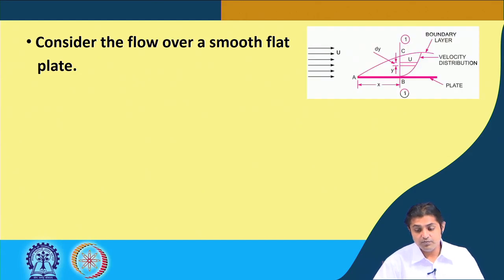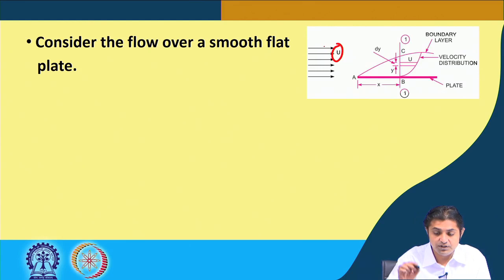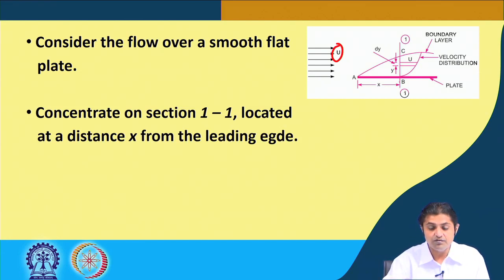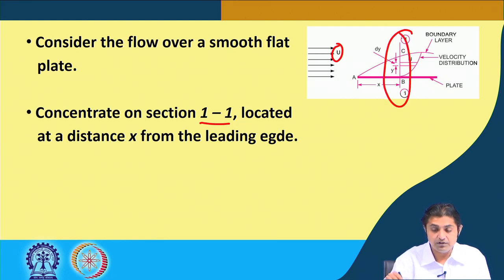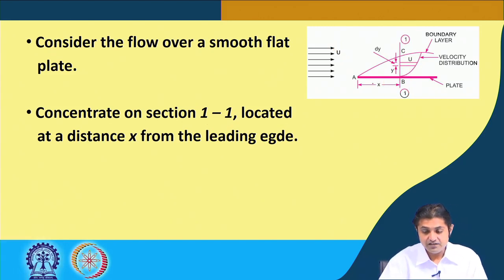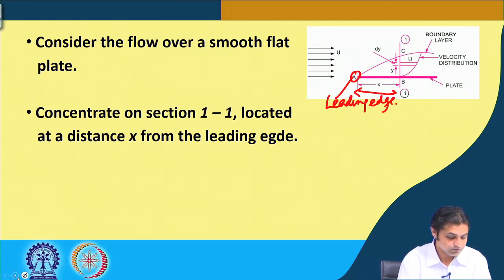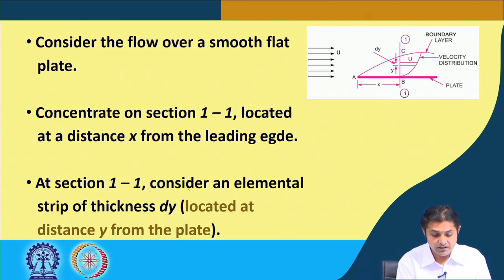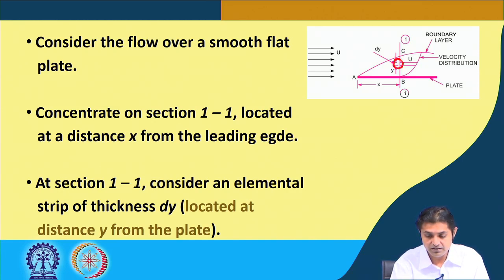We consider the flow over a smooth flat plate. There is a flow coming with speed U, there is a flat plate, and at any distance x there is a section 1-1, located at a distance x from the leading edge. At section 1-1, we consider an elemental strip of thickness dy, located at a distance y from the plate.